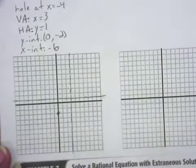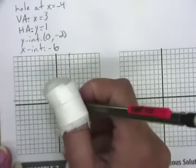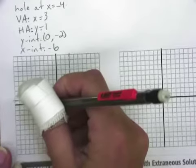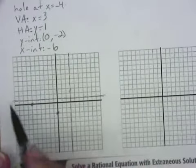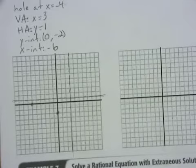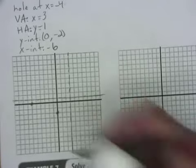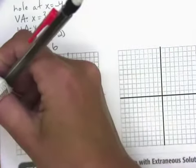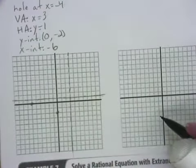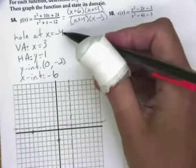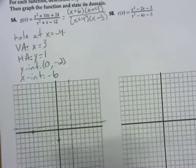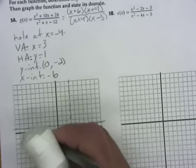Horizontal asymptote at Y equals 1. A Y-intercept at 0, negative 2. And an X-intercept at negative 6. And you know what these rational functions look like by now. You know that they're going to kind of hug the asymptotes. And so, you see that it's going to hug here and then go along here.